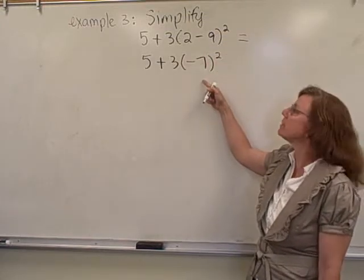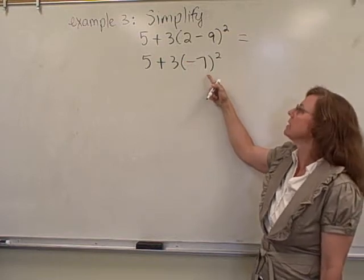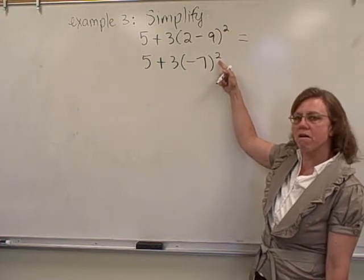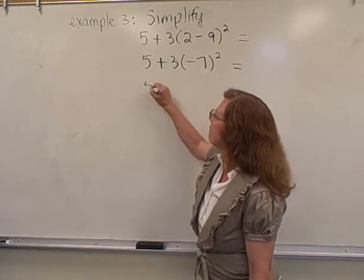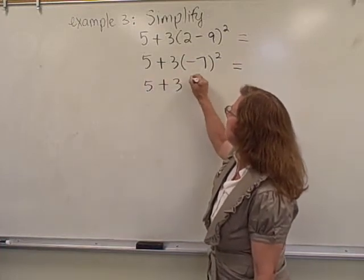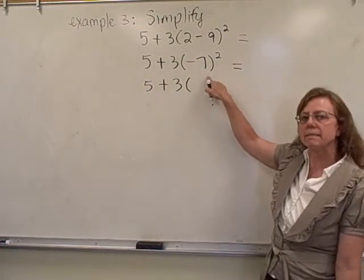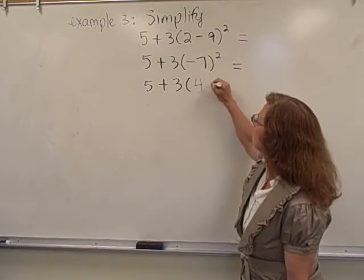And so, after grouping symbols, are the exponents. So I need to square negative 7, and so I'll have 5 plus 3 times, a negative times a negative is positive, so times positive 49.